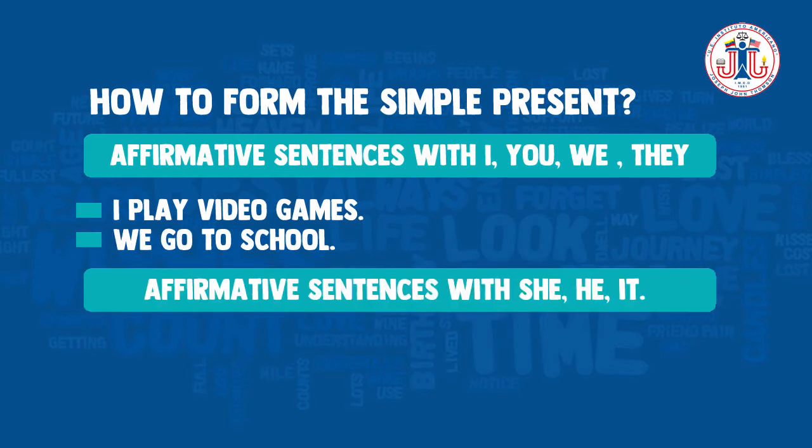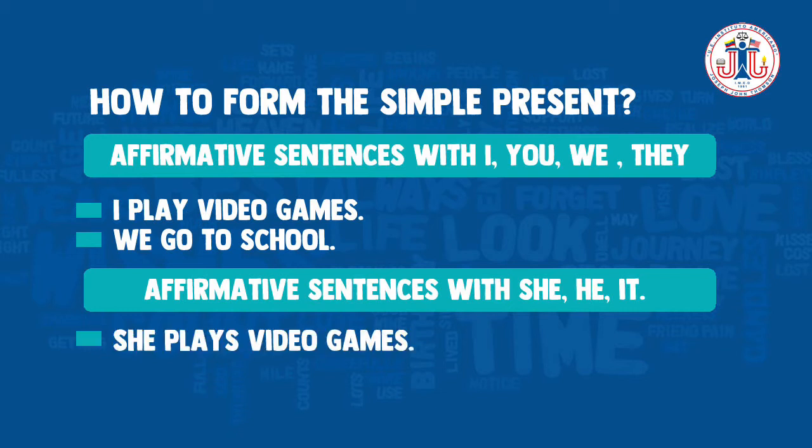Affirmative sentences with she, he, or it. In this case, you have to add an S or ES at the end of the verb. For example, 'she plays video games' or 'he goes to school.'